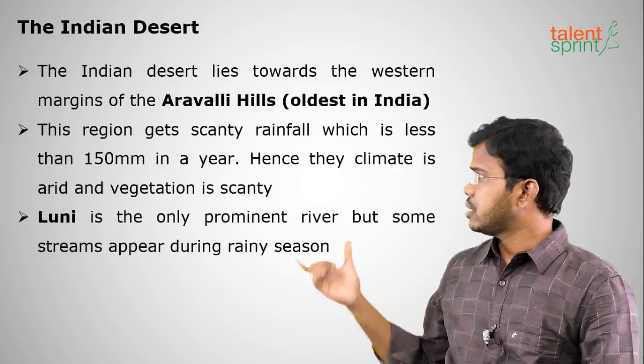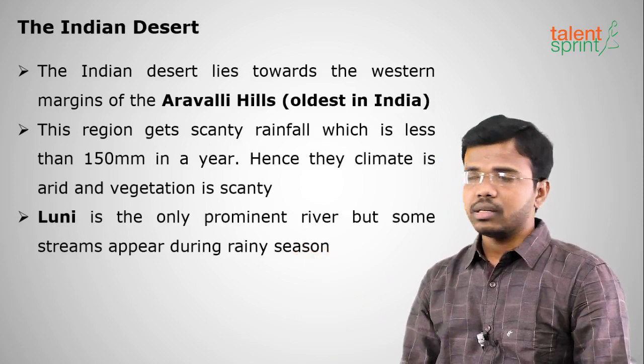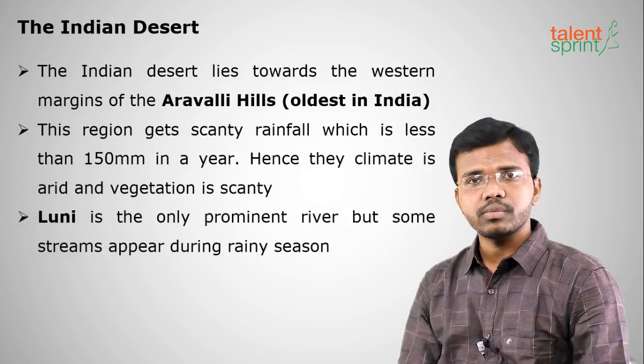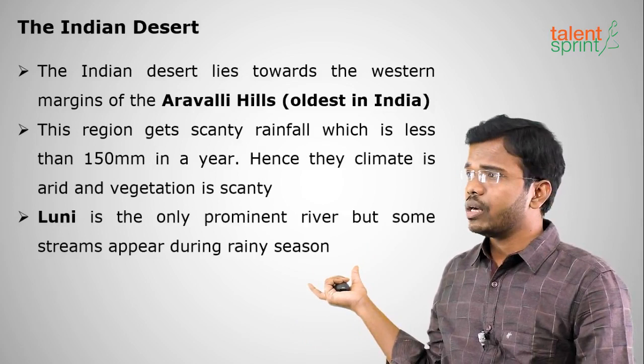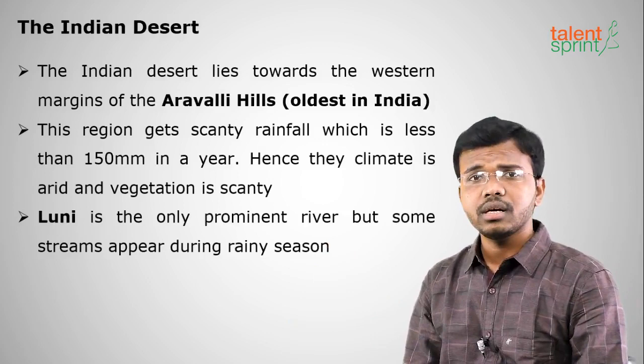The Indian Desert lies to the northwestern part of India. It extends through Gujarat, Rajasthan, and parts of Haryana and Punjab, but is mostly in Gujarat and Rajasthan. It lies to the western margins of the Aravallis — the oldest mountains in India. The Luni River is a major river here. Rainfall is very low — less than 150 mm per year — creating dry desert conditions.